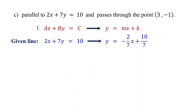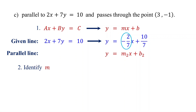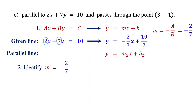Pause the video and try finding the equation of the parallel line. The next step is to identify the slope of the given line. It is negative 2 sevenths, so m equals negative 2 sevenths. By the way, you can also find the slope directly from standard form using this formula, where a is 2 and b is 7. So the slope is negative 2 sevenths, which matches our earlier result. If you remember this formula, you can skip converting the standard form to slope-intercept form entirely.